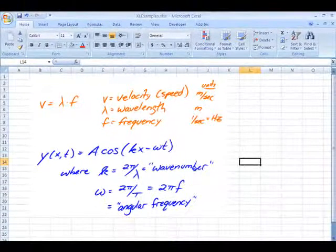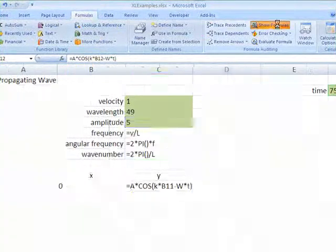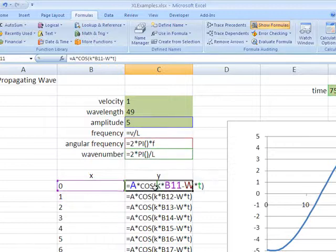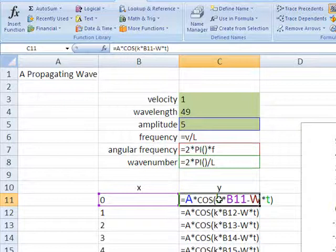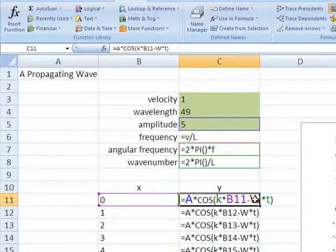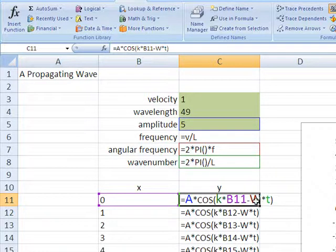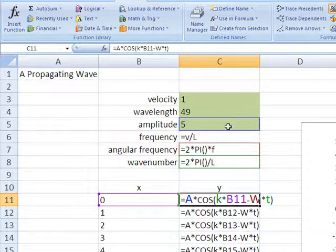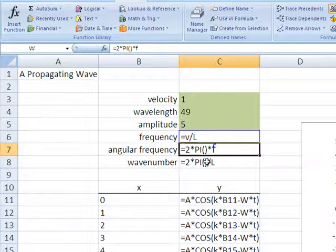Now let's go back to the spreadsheet and we will show the formulas. Here we have y is equal to A cosine kB11 minus - I'm using a W for omega times T. Unfortunately you can't name cells with Greek letters. The omega sort of looks like a curvy W, so I'm using a W as the name for cell C7, using a W to represent the angular frequency.